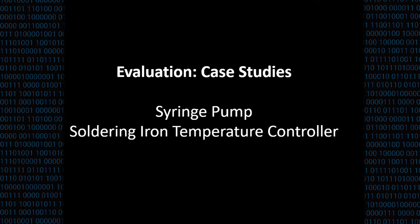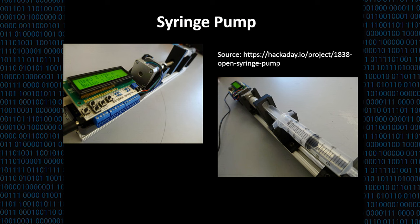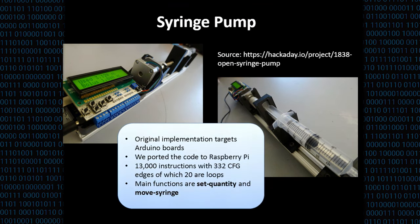I already mentioned we have two case studies, one on an open syringe pump and another one on the Solder and iron temperature controller. For the sake of time, I only focus on the rest of the presentation on the open syringe pump. The syringe pump is an electromechanical system that allows dispensing and withdrawing small amounts of liquids. The original implementation of the open source syringe pump targets Arduino boards. So we needed to port this code to Raspberry Pi, which didn't require so much changes. Finally, we got over 300 CFG edges, including 20 loops.